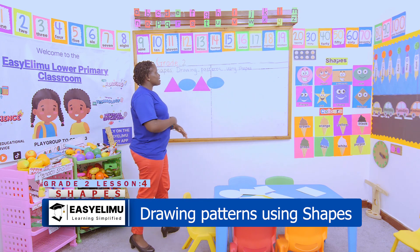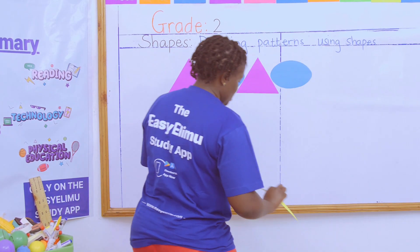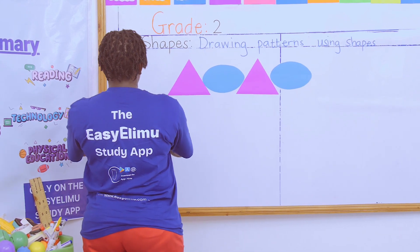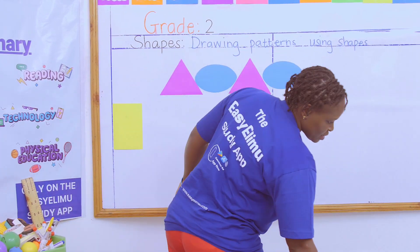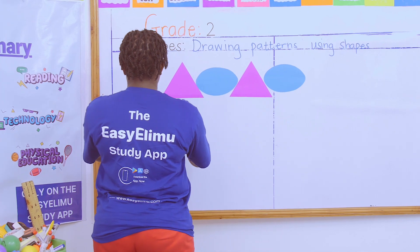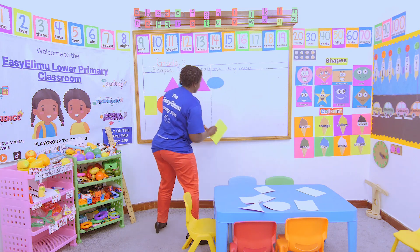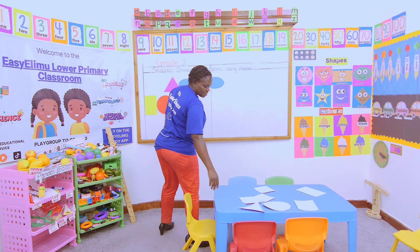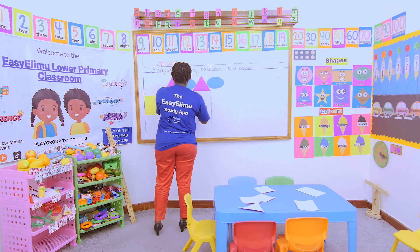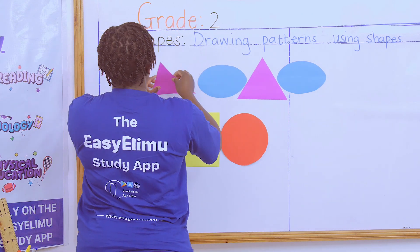That is a pattern — anything that repeats itself is a pattern. Alternatively, I can decide to use the rectangle facing up, put the circle in between, put again the rectangle, and then the circle again. I have made a pattern.